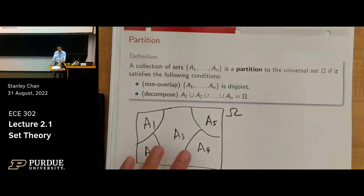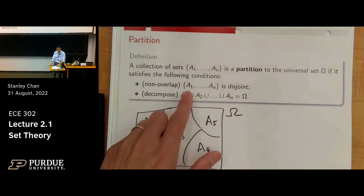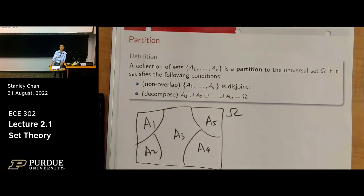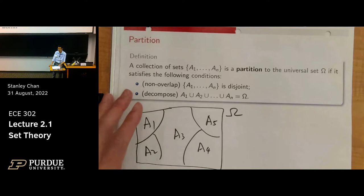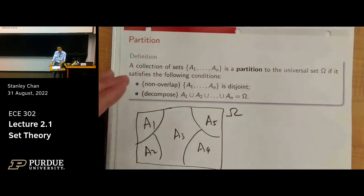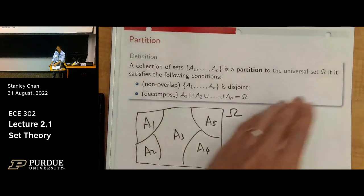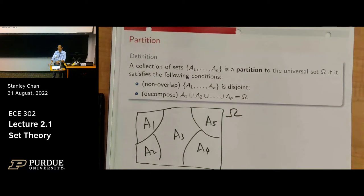These sets have a very interesting property: if you look at their overlaps, they do not overlap. So we say that this collection of sets A1 through A5 forms a partition of the universal set. A collection of sets forms a partition of omega when you can cut omega into many smaller pieces where each piece does not overlap with another, and the union of everyone covers the entire set.